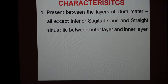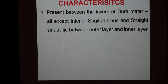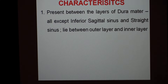These dural venous sinuses are present between the layers of the dura mater. All except the inferior sagittal sinus and the straight sinus — these two sinuses are present between the meningeal layers of the dura mater, whereas all the rest are present between the outer endosteal layer and the inner meningeal layer of the dura mater. They are present between the two layers of the dura mater, and hence they are called dural venous sinuses.